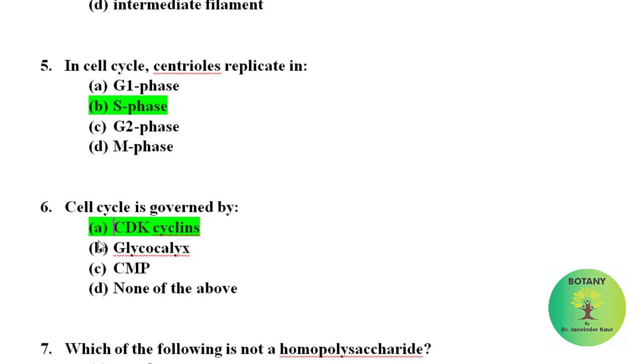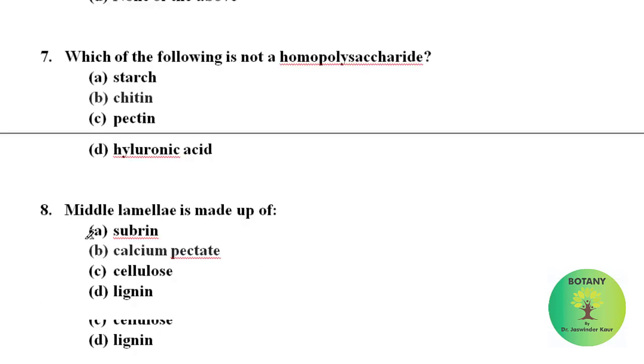Cell cycle is governed by CDK cyclins. CDKs are the cyclin dependent kinase that are present in all eukaryotic cells. Which of the following is not a homopolysaccharide? That is chitin. Chitin is a large structural polysaccharide made from chains of modified glucose and it is in cell wall of all fungi.